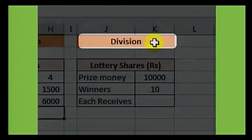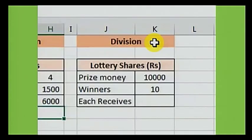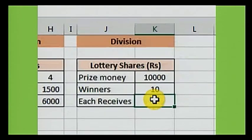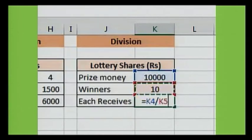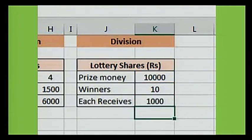Coming on to the final example, this is a division calculation. Click on the cell where we want the result to appear. Press the equal key on the keyboard, click on the prize money value, press divide on the keyboard, click on the number of winners — in this case 10 — and press the enter key. We see that each person will be receiving 1000 rupees.